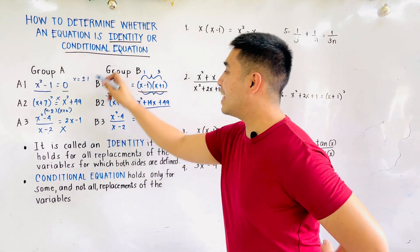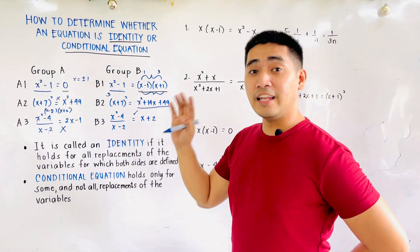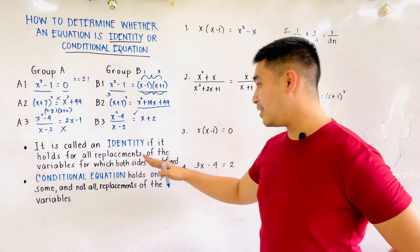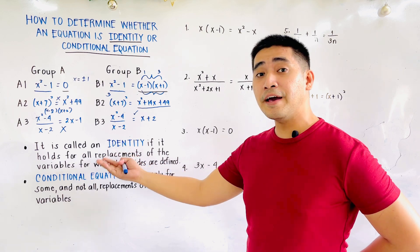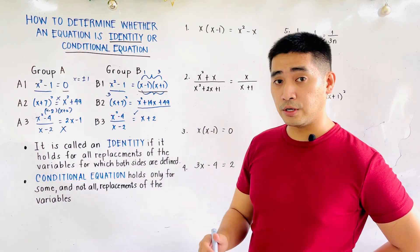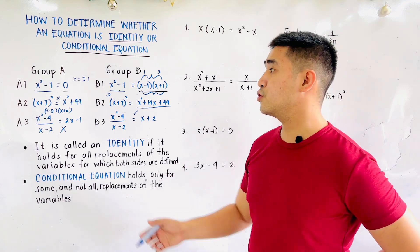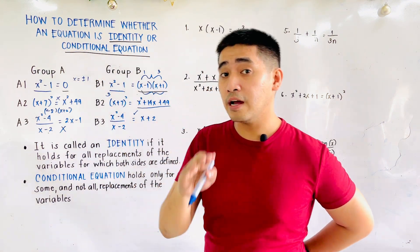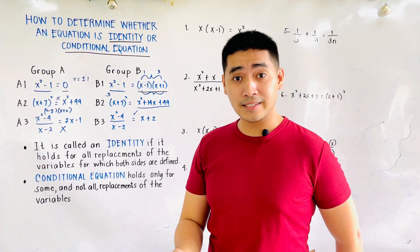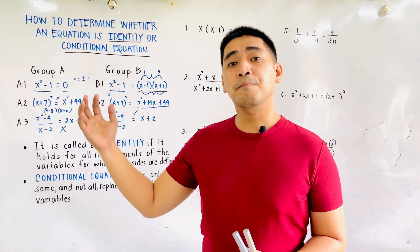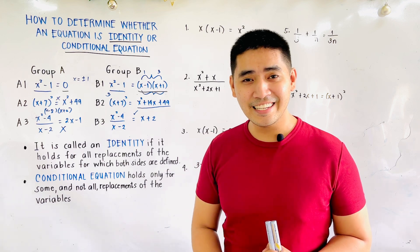They are identical. In this case, we will call this an identity. Remember that if it is an identity, the left side is equal to the right side, or it is called an identity if it holds for all replacements of the variables for which both sides are defined. If it does not hold for both sides, therefore we will be calling this a conditional equation. A conditional equation holds only for some and not for all replacements of the variables — just like Group A. It will be an identity if it is true for all values of x from negative infinity up to positive infinity.